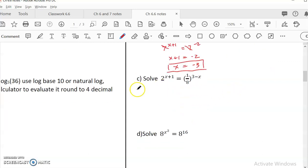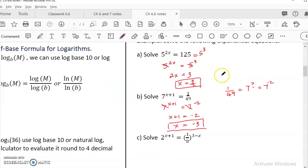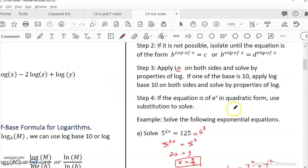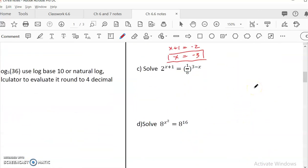The more tricky ones are like this. I have 2 to the x plus 1. Oh, there's another base, but it is 1 eighth to the power 3 minus x. So this obviously is not the same base. But if you look carefully, 1 eighth actually can be written as 2 to the negative 3. 8 is 2 to the third, so this is 2 to the negative 3. So I can actually replace this so they're the same base.